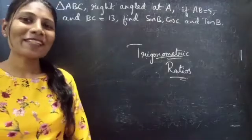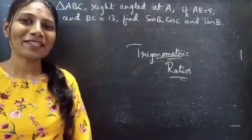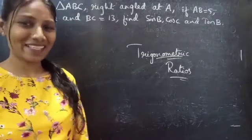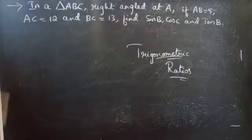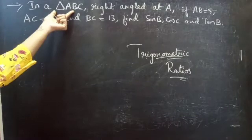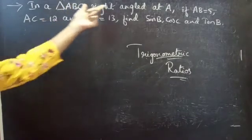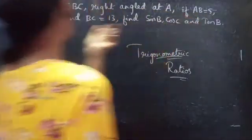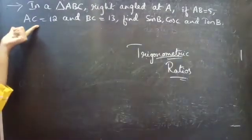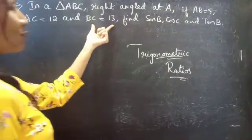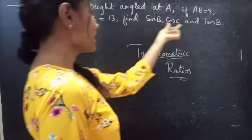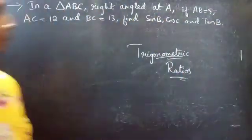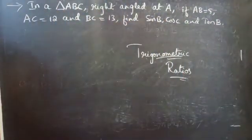Hello everyone, this is Kalpana here. In this video we are going to see a problem from trigonometric ratios. Problem: in a triangle ABC, right angle at A, if AB equals 5, AC equals 12, and BC equals 13, find sine B, cos C, and tan B.